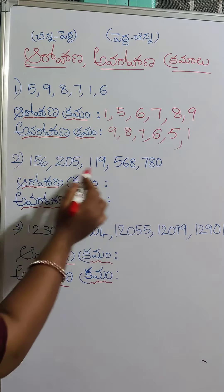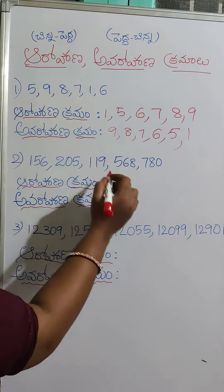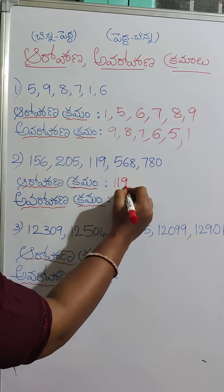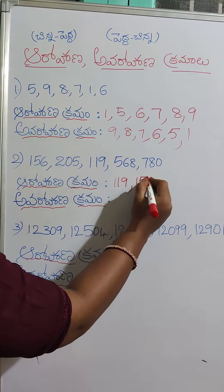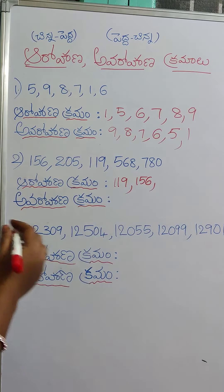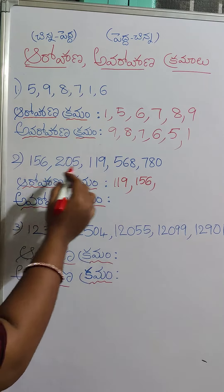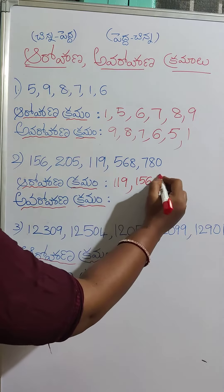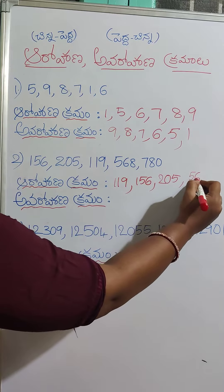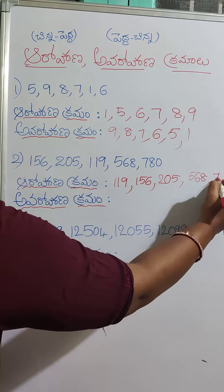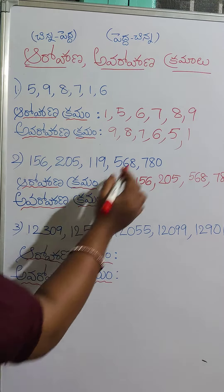Arohana Kramam. This is a native Kramam: 1-5-5-5-5. Next, 5-5-5-5-5. Next, 5-5-5-5-5. Next, 7-8-5, 1-5-5-5.